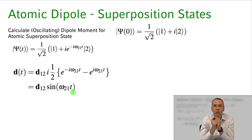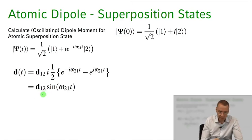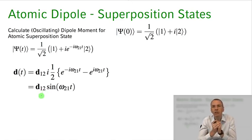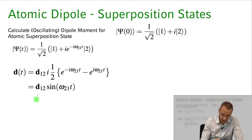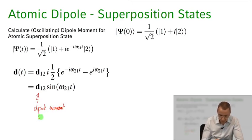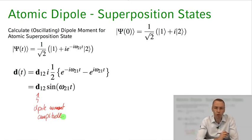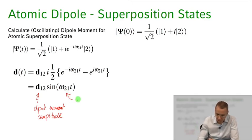We see that when the atom is in a superposition state, we get an oscillating dipole moment. The magnitude of the oscillating dipole moment is given by the dipole matrix element d₁₂ — the matrix element of states 1 and 2 over the dipole operator. The oscillation frequency is given by the natural resonance frequency of the atom, omega 2,1.